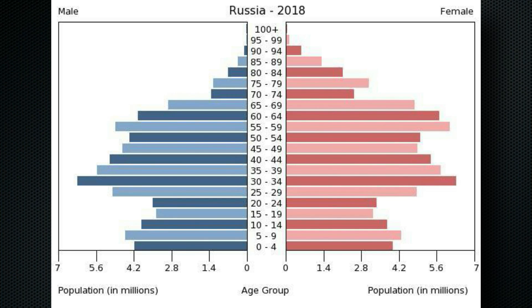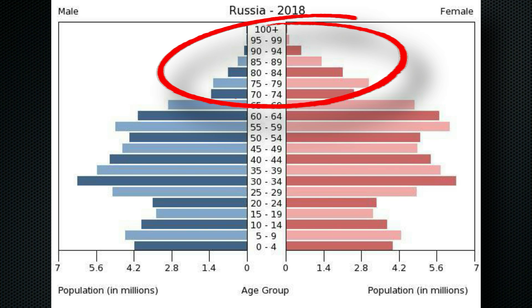These pyramids can also show us a glimpse into the past of a society. For example, looking at Russia's population pyramid from 2018, if we focus on the 70-and-up group, we can see significantly fewer men than women. This shows the scars of past wars where men were drafted and women were not.